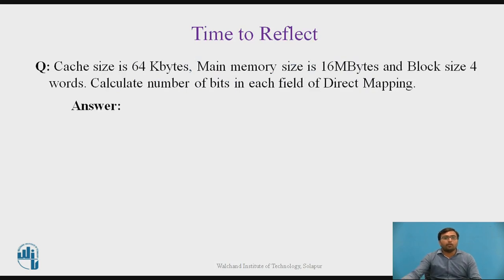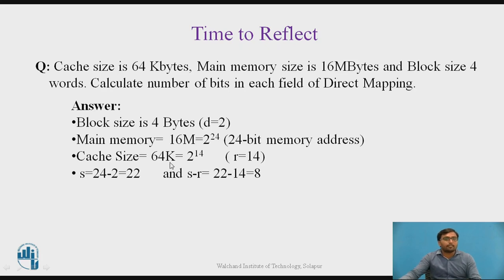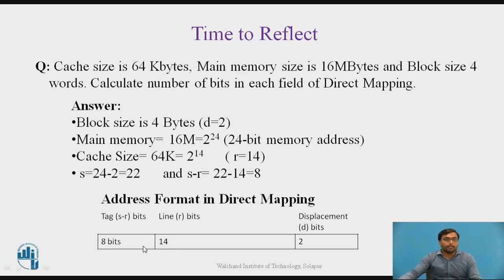This is time to reflect. Pause the video and answer the question. The cache size is 64 kilobytes, main memory size is 16 megabytes, and block size is 4 words. The block size of 4 means displacement D equals 2 bits. Main memory of 16 megabytes means 2 raised to 24, so total address length is 24 bits. Cache size of 64 kilobytes means 2 raised to 14, so R equals 14 bits. Thus the tag S equals 24 minus 2 minus 14, giving S equal to 8 bits. The fields are: tag = 8 bits, line R = 14 bits, displacement D = 2 bits.